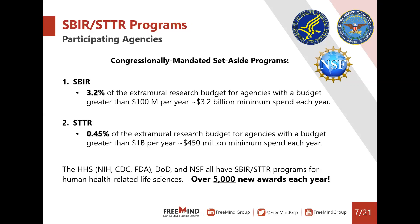Participating agencies include the Department of Health and Human Services — which includes the NIH, CDC, and FDA — the Department of Defense, and the NSF. All of these agencies have SBIR and STTR programs for human health-related life sciences. Over 5,000 new awards are issued annually from SBIR and STTR. In this presentation we'll focus mostly on the NIH and a bit on the NSF, as these are the two most prominent agencies funding these programs.